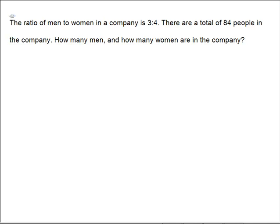How many men and how many women are in the company? When a problem says there's a ratio of 3 to 4, that doesn't mean 3 of one and 4 of the other. It really means 3 times some number to 4 times some number. So it's like 3x to 4x, where x is an unknown.